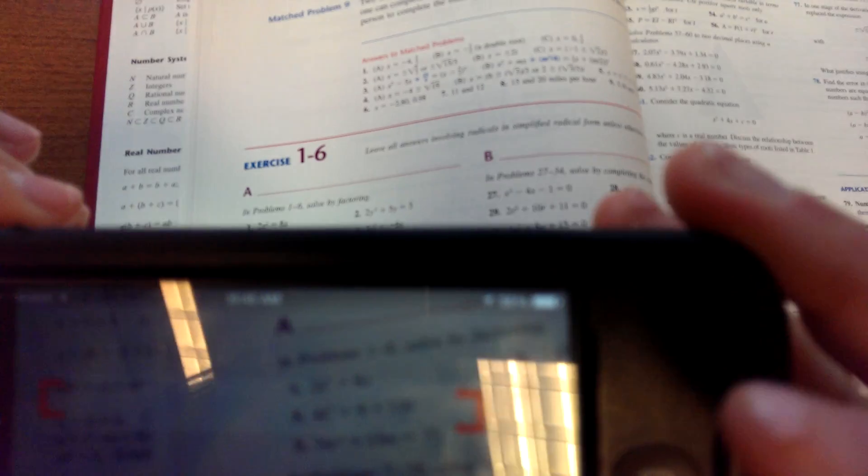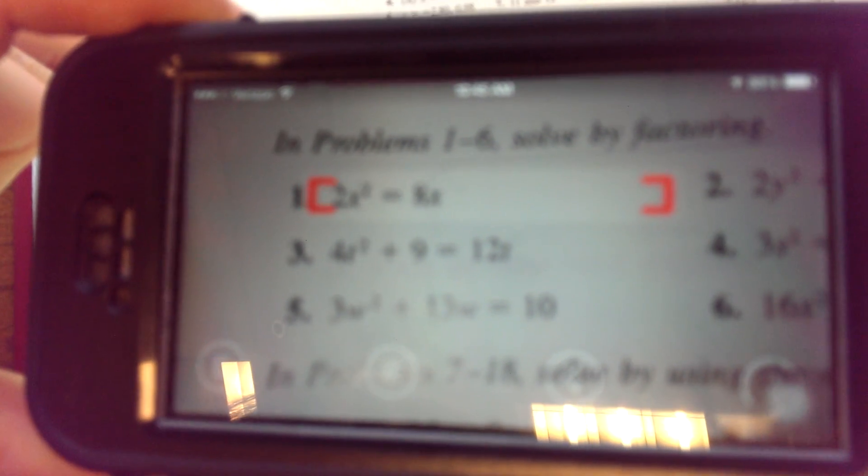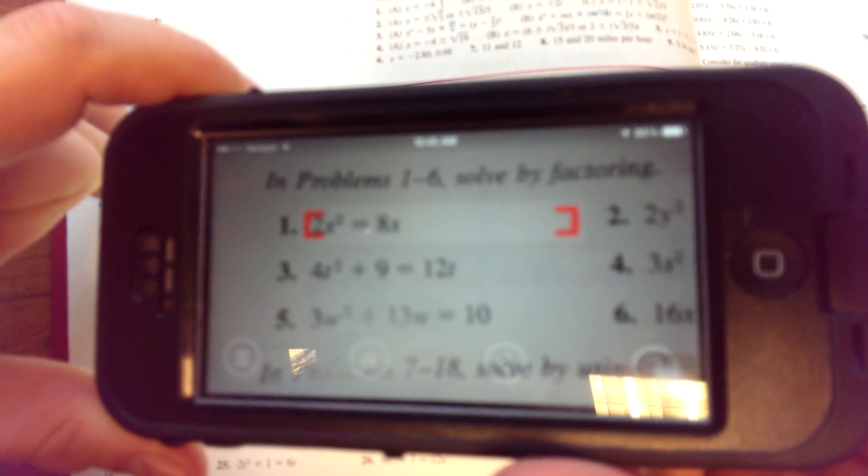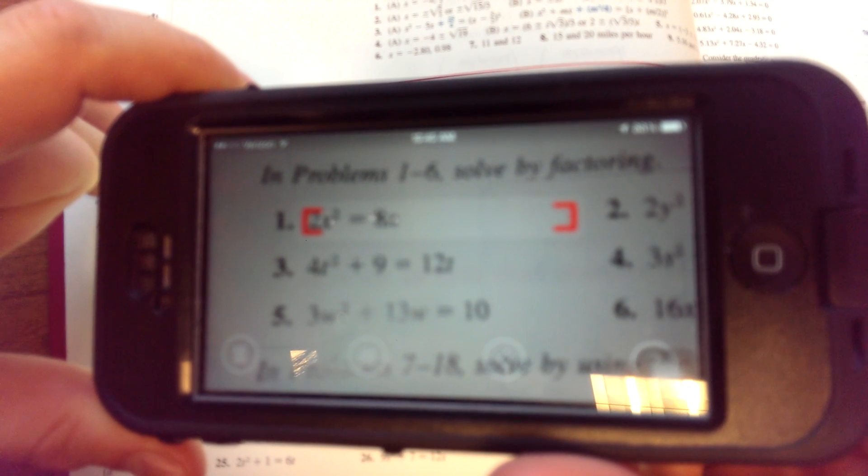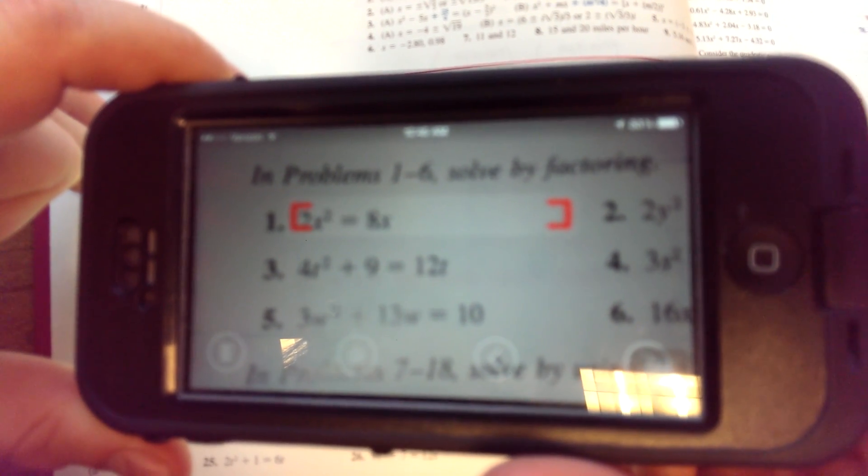Let's make the capture screen a little smaller so it doesn't accidentally get things we don't want. So we're going 2x squared equals 8x. I might have to make my box a little bit bigger. Let's see if this works.